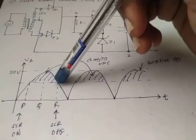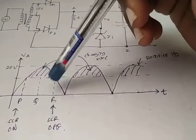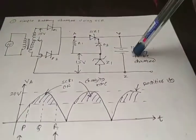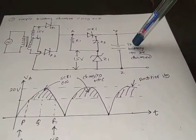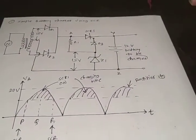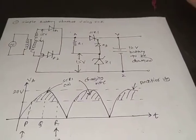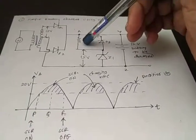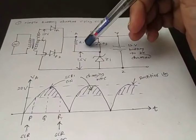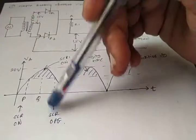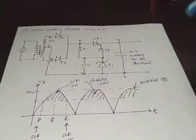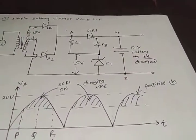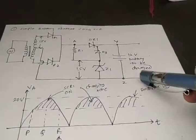At point R on the waveform, the battery is fully charged — meaning it has charged beyond 12 volts to 13 or 14 volts. At that point the SCR turns off and the charging period of the battery automatically stops. The most important aspect of this circuit is how the SCR turns off.